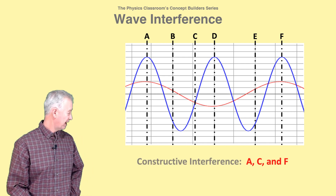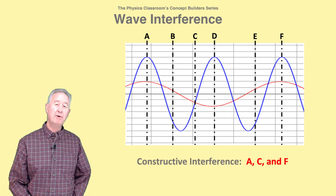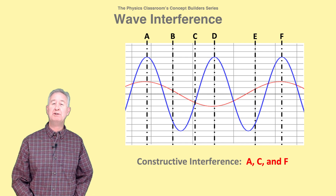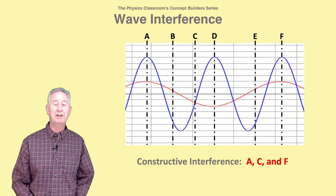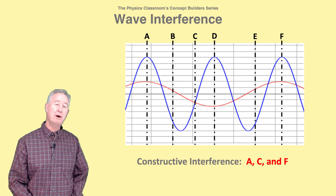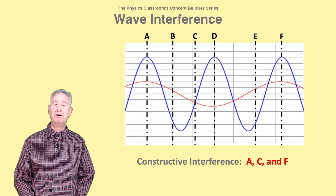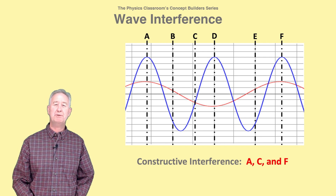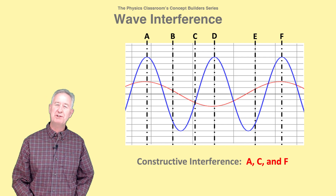Points A and F represent constructive interference since both waves are displaced upwards at these two locations. Point C also represents constructive interference since both waves are displaced downwards at this location.